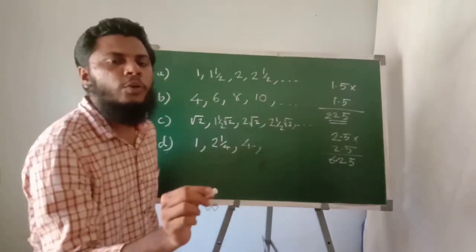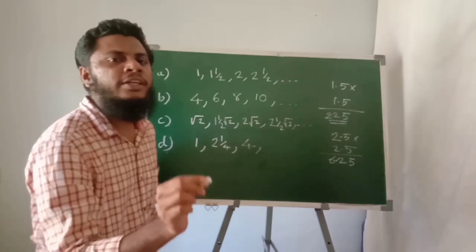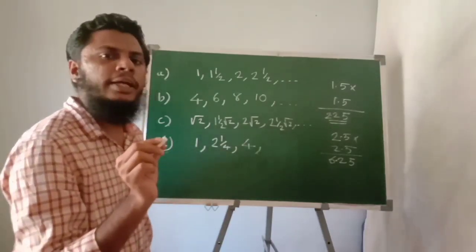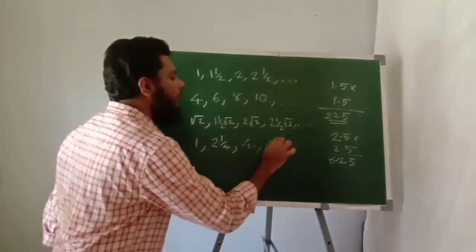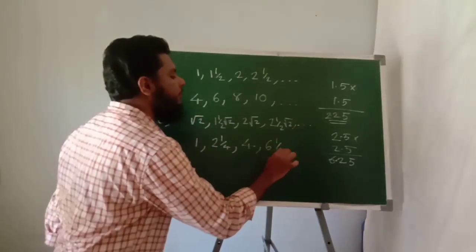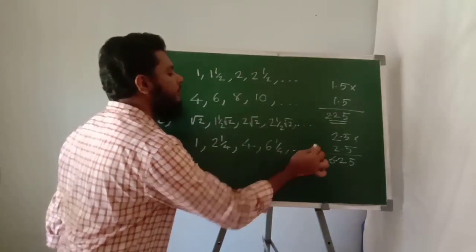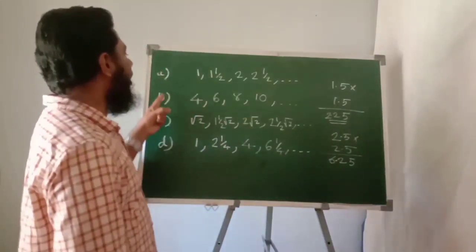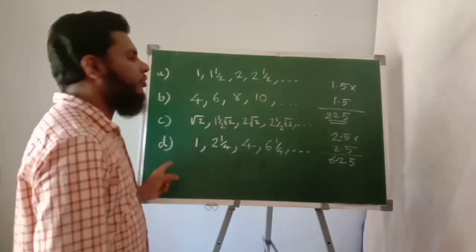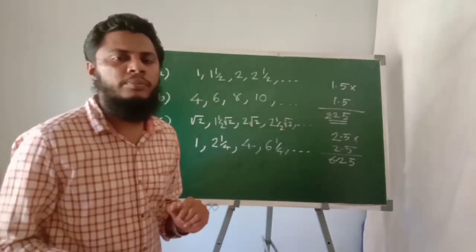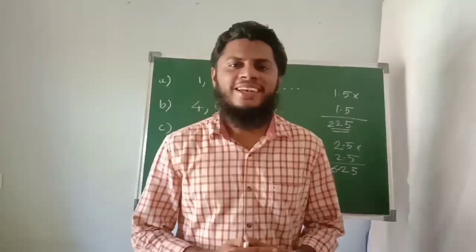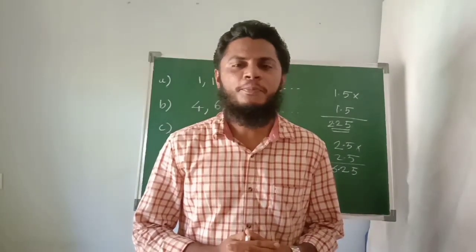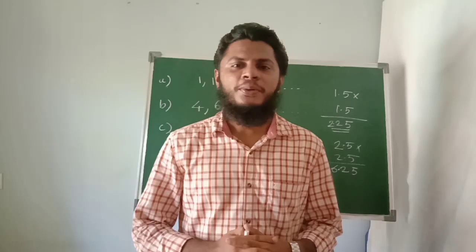2 and a half squared is 6.25. There are 4 sequences in total.